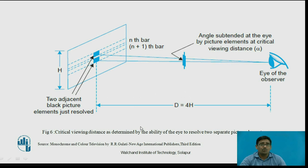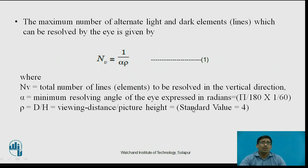This diagram shows the critical viewing distance as determined by the ability of the eye to resolve two spaced pictures. It shows D equal to 4H. The observer's eye views two distant black picture elements just resolved — the nth bar and the (n+1)th bar — with a specific eye angle. We calculate the distance required for two adjacent black picture elements to just be resolved. The maximum number of alternate light and dark elements which can be resolved by the eye is given by the formula: nv = 1 / (alpha × rho).